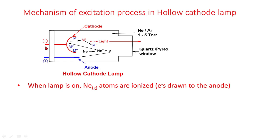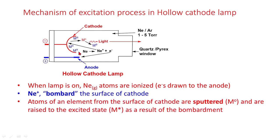Mechanism of excitation process in hollow cathode lamp: When lamp is on, neon atoms are ionized, giving rise to Ne+ and electrons. Electrons are drawn to the anode. Neon cations (Ne+) bombard the surface of the cathode, physically displacing the metal atoms from the surface of the cathode. This process is termed as sputtering.